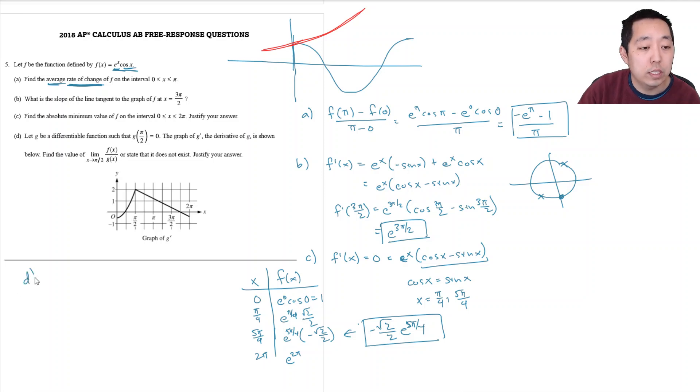So D, let g be the differentiable function since that g of pi over 2 equals 0. The graph of g prime, the derivative of g, is shown below. Find the value as a limit as x goes to pi over 2, f of x over g of x and say if it doesn't exist.